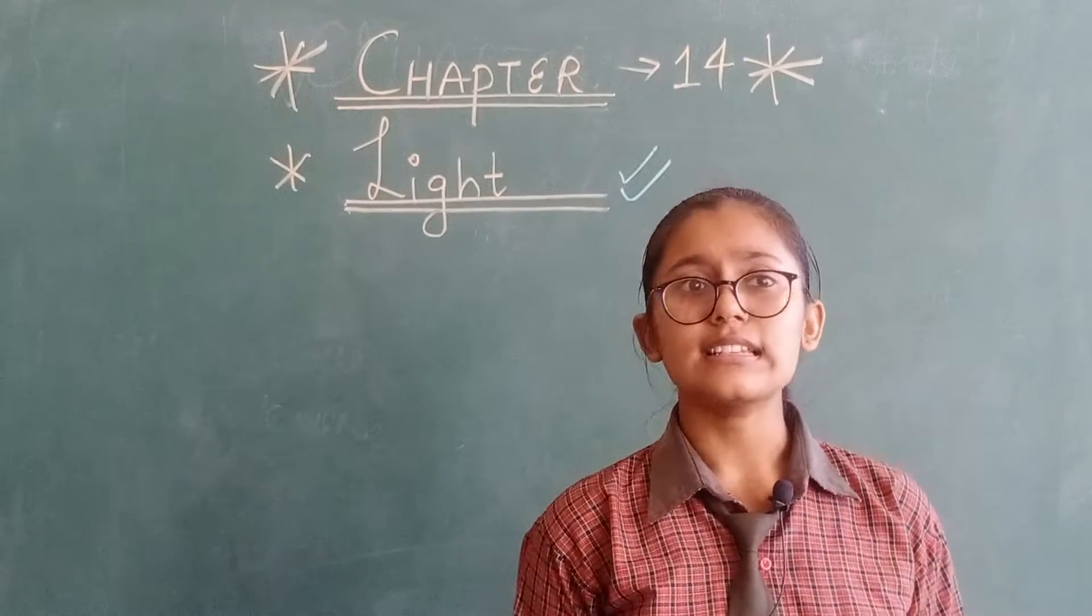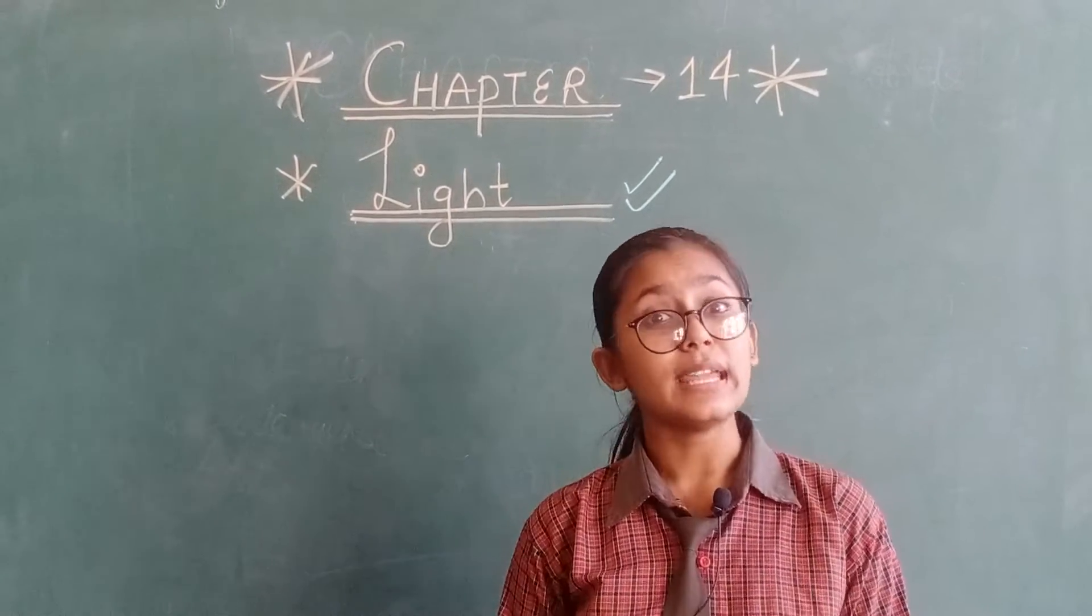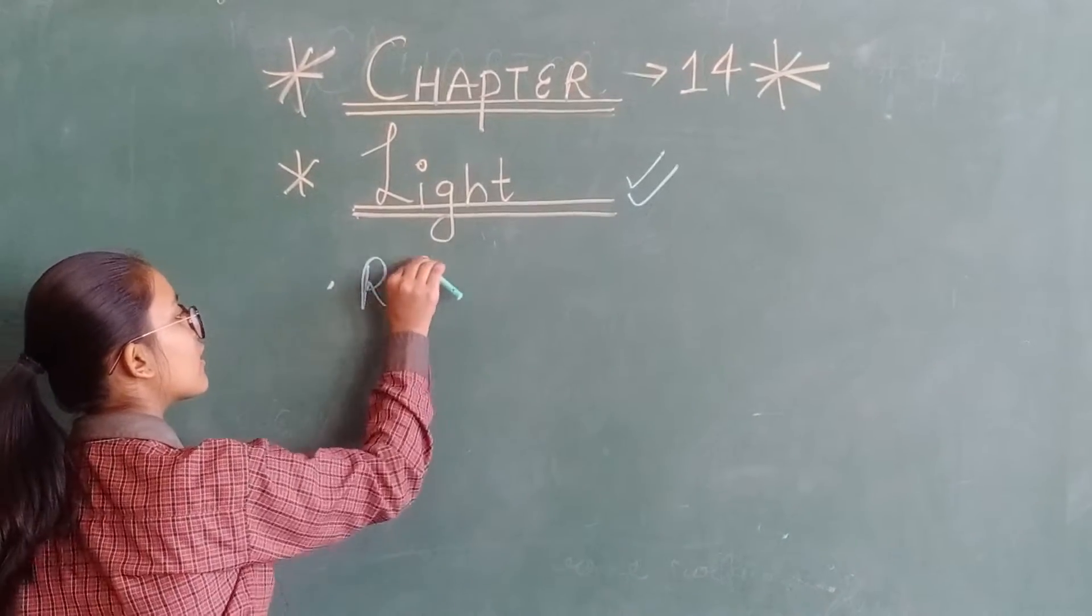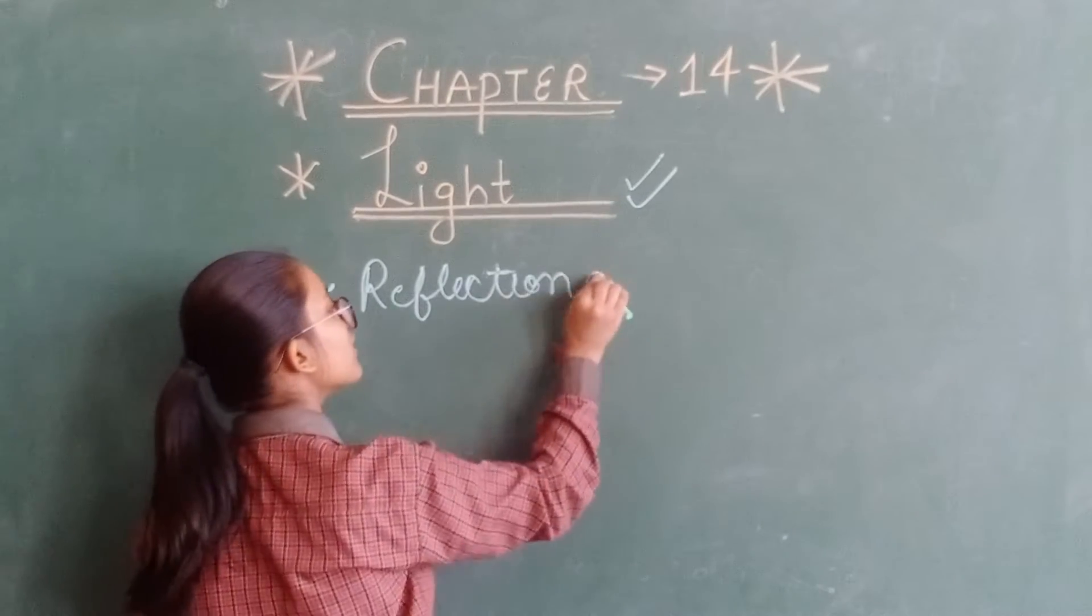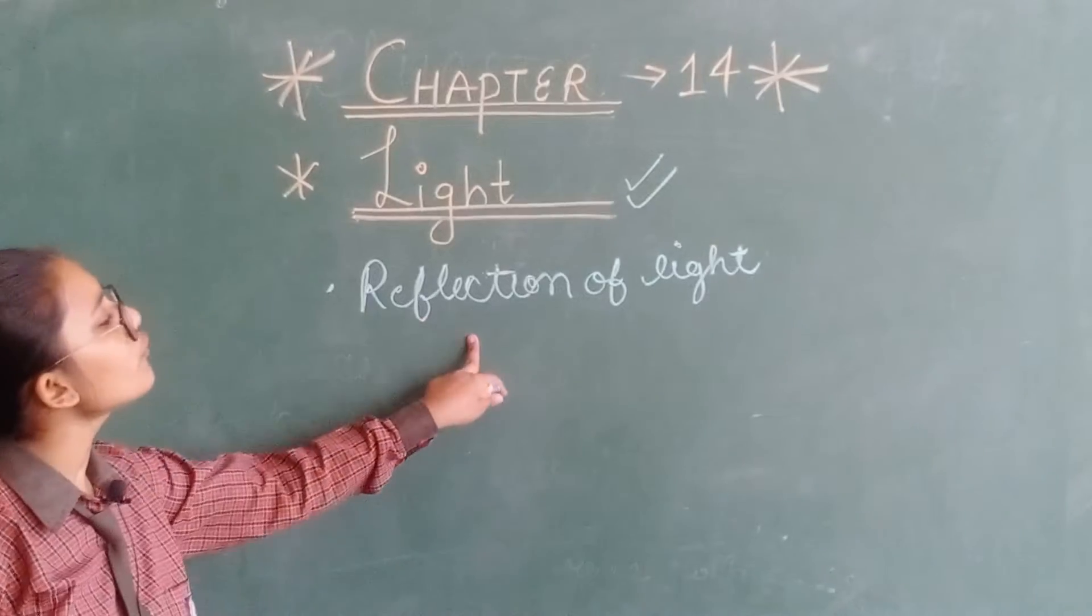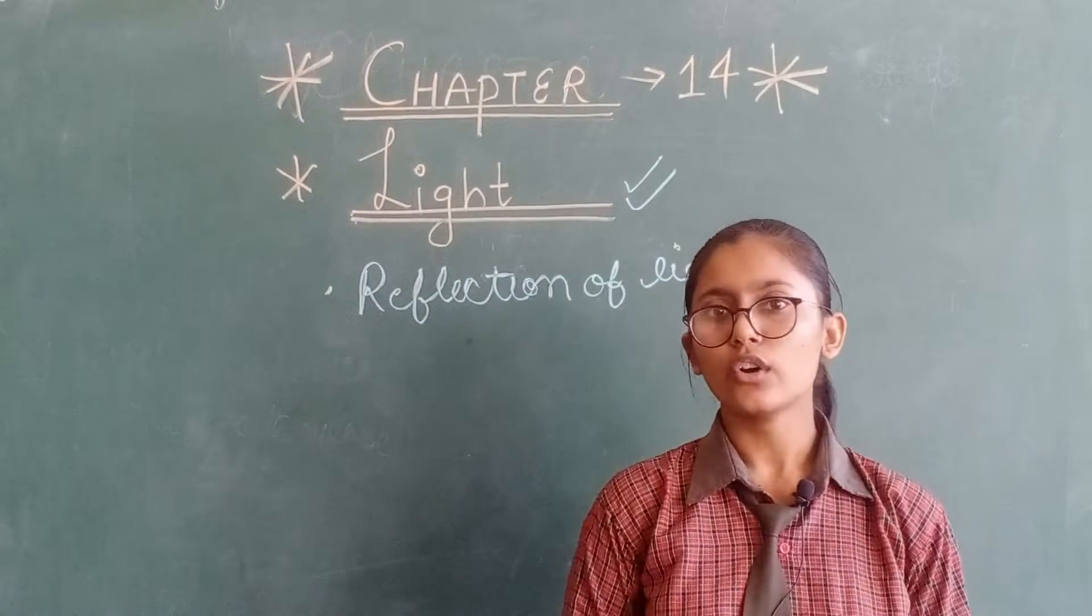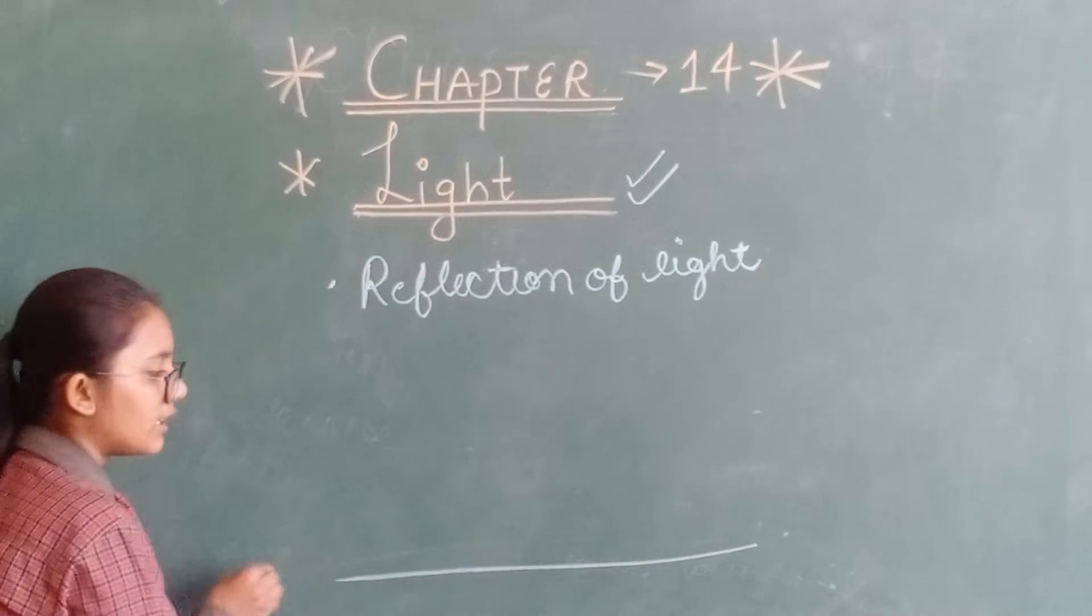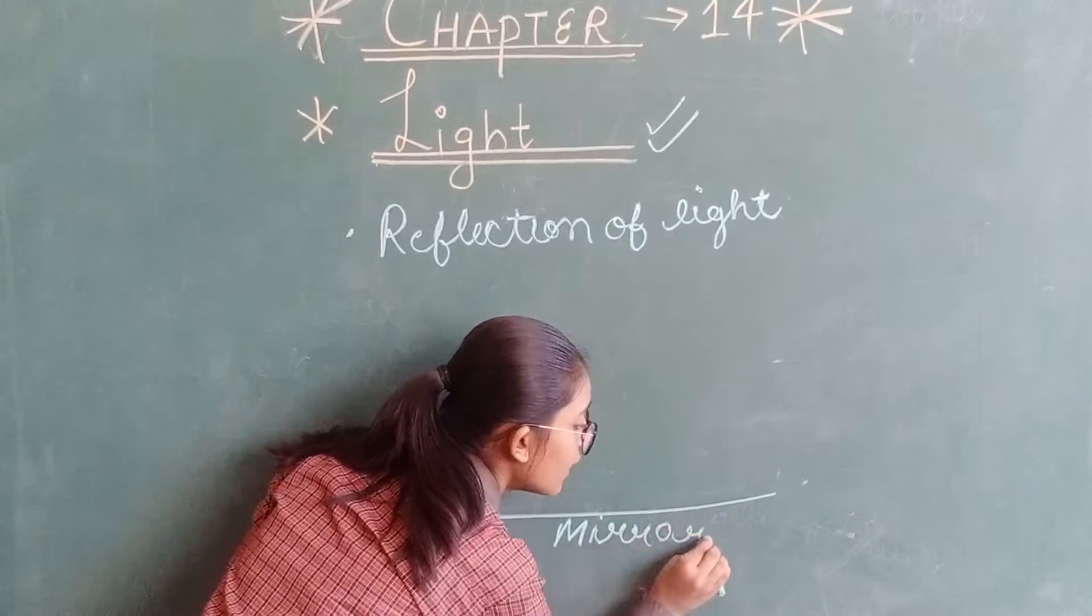In the earlier classes, you have learnt about the reflection of light and laws of reflection. We will again study them but in a deep manner. First is reflection of light. Reflection of light means the bouncing back of light from an object to another. We can understand it by a diagram. See, this is a surface, we can say the mirror, surface of a mirror.